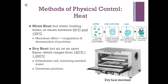Next are our methods of physical control, specifically heat. Elevated temperatures create a microbicidal effect; lower temperatures slow growth without killing all microorganisms, which we call microbiostatic. The higher the temperature a microorganism is exposed to, the shorter the time needed to sterilize. We have two different types of heat: moist heat, using hot water, boiling water, or steam between 60 and 135 degrees Celsius, and dry heat.